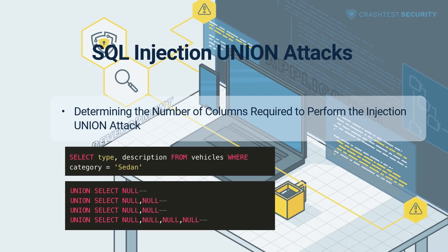In the second method, the attacker submits a series of UNION SELECT statements, each specifying several null values. Malicious queries in such an instance would look similar to the code shown in the video. Once the nulls outnumber the field column index, the server returns a database error. This could also be similar to the mistakes in the first method, or a null pointer error, that allows attackers to infer the number of columns.